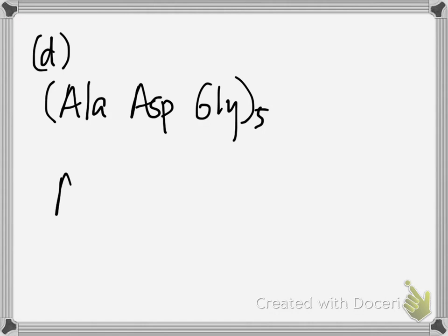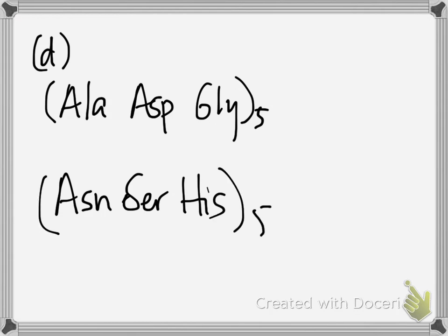And the next part of the problem is D. And we've got peptide alanine, aspartate, glycine repeated five times, or asparagine, serine, histidine repeated five times. And we're talking about a pH of 3. Again for simplicity, I'm going to cross off the groups that are neither polar nor ionizable.